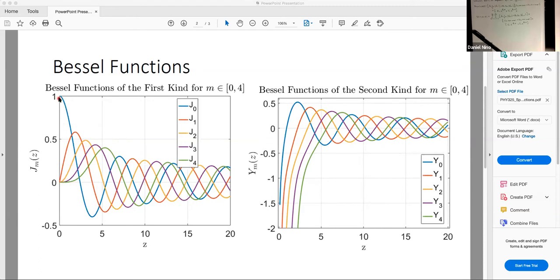Notably, at z is equal to 0, it starts at 1. Whereas the Bessel functions of the first kind of higher order start at 0 when its argument is equal to 0. But they all have this natural oscillatory pattern.